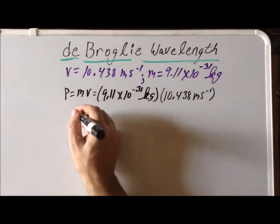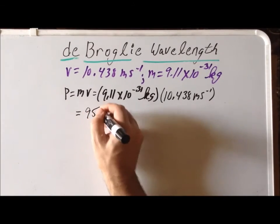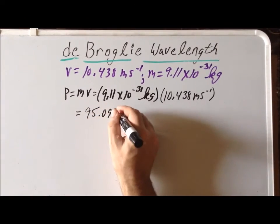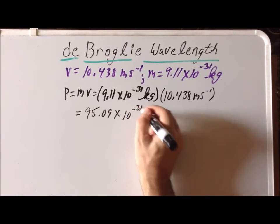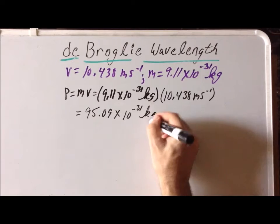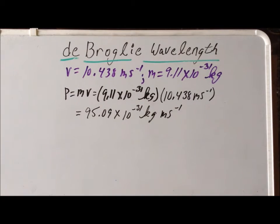And once we do this calculation, we get that the momentum of the electron is going to be 95.09 times 10 to the minus 31 kilogram meters per second. So we see the momentum of the electron is far lower than it was for the sprinter.